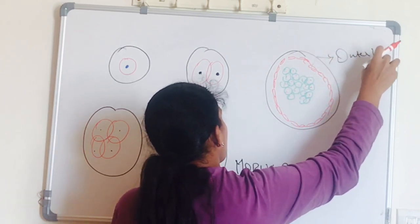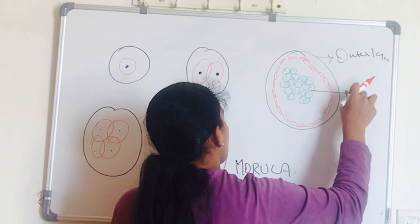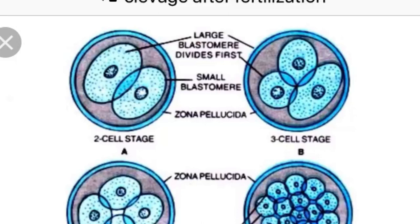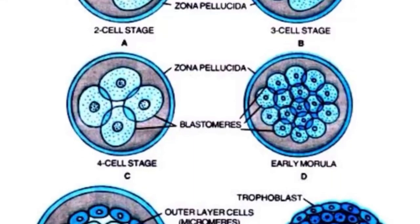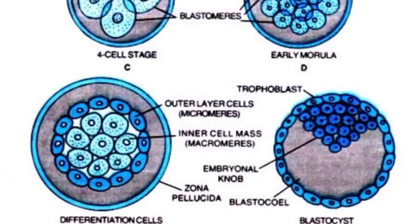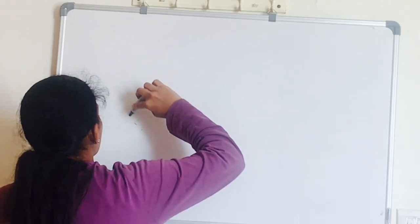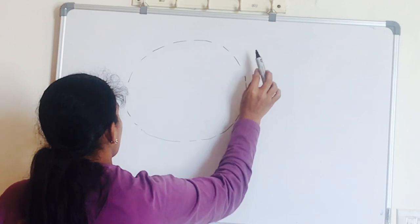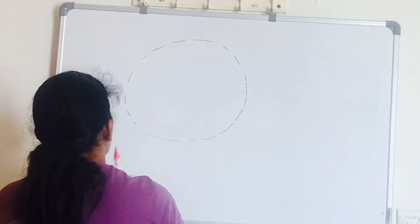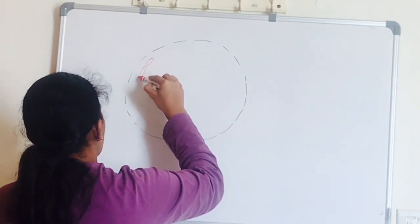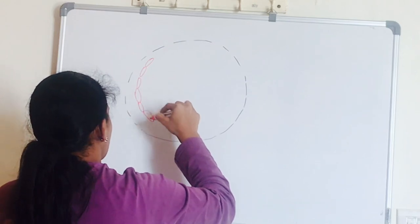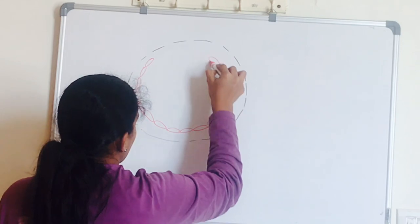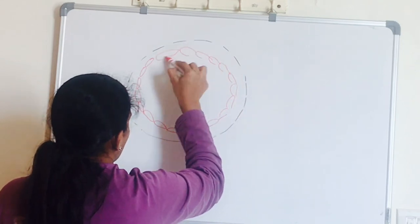So the cells of the trophoblast help to provide nutrition to the inner cell mass which is embryo. The zona pellucida layer disappears and the outer cell mass layer is called trophoblast.